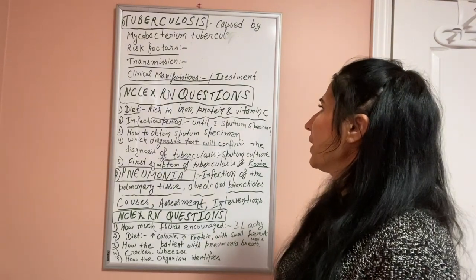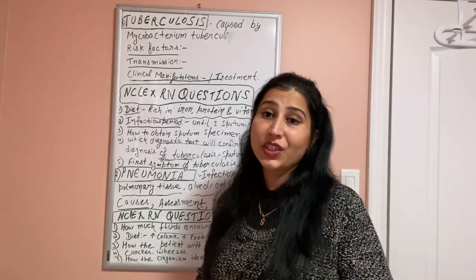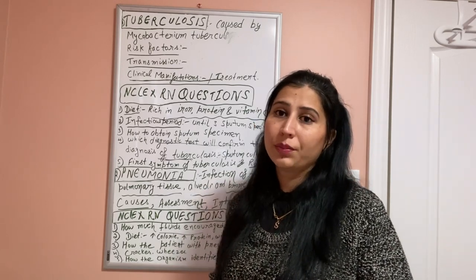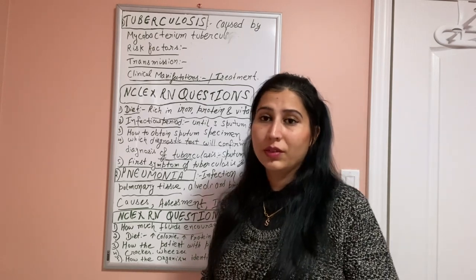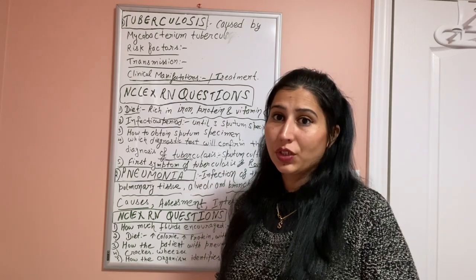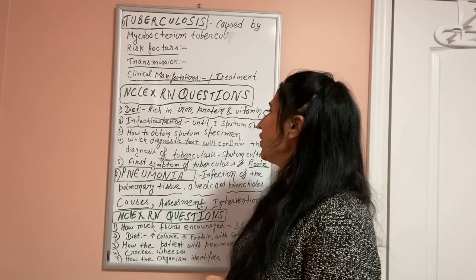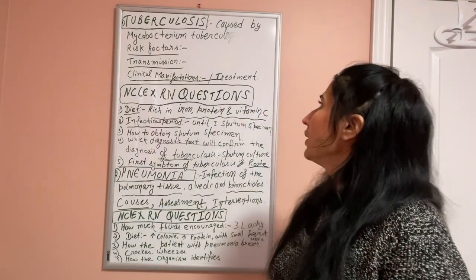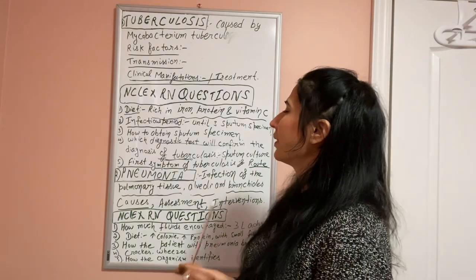The treatment for tuberculosis is directly observed therapy. Medication continues for six months to one year, according to the doctor's assessment. The person needs to be very consistent with the medication because they cannot miss a dose. Specific medications are used for tuberculosis.